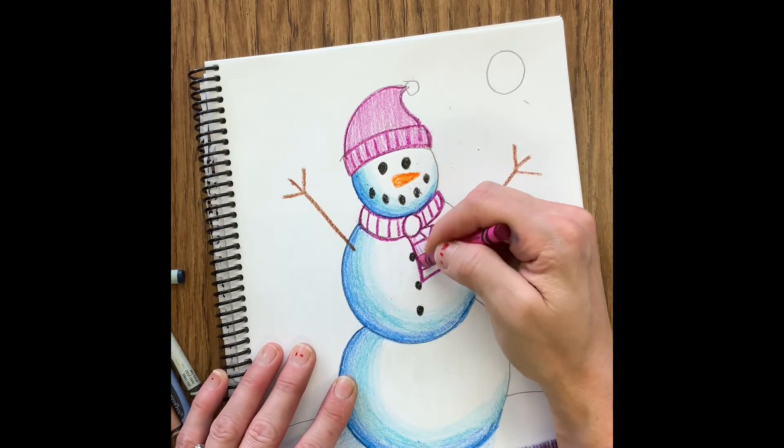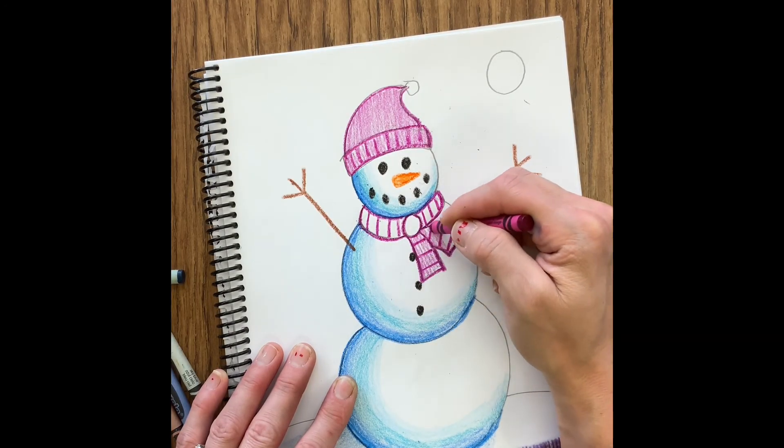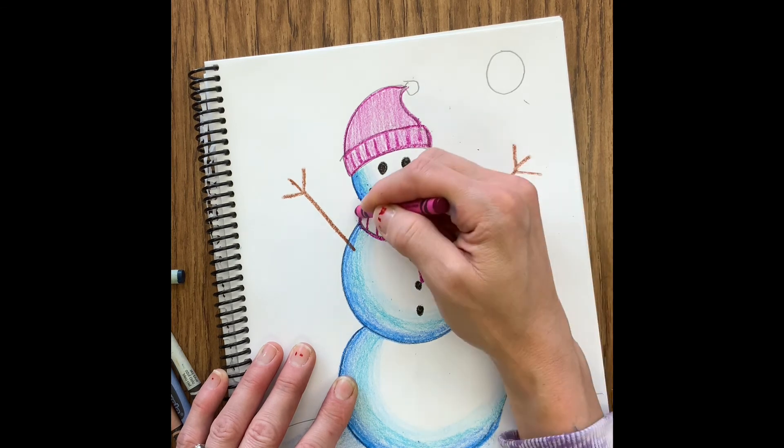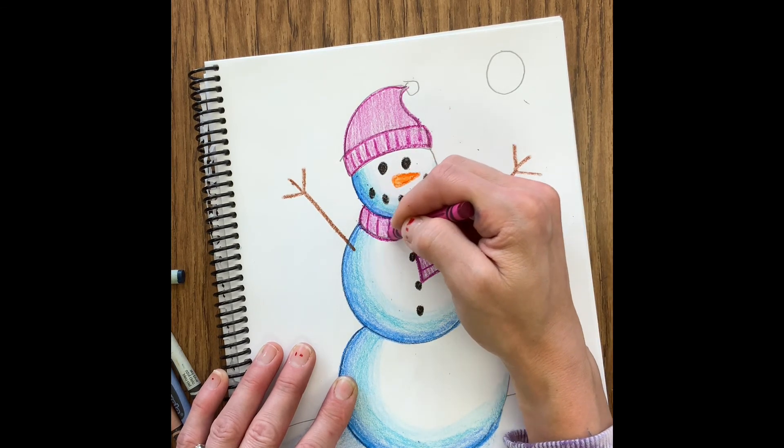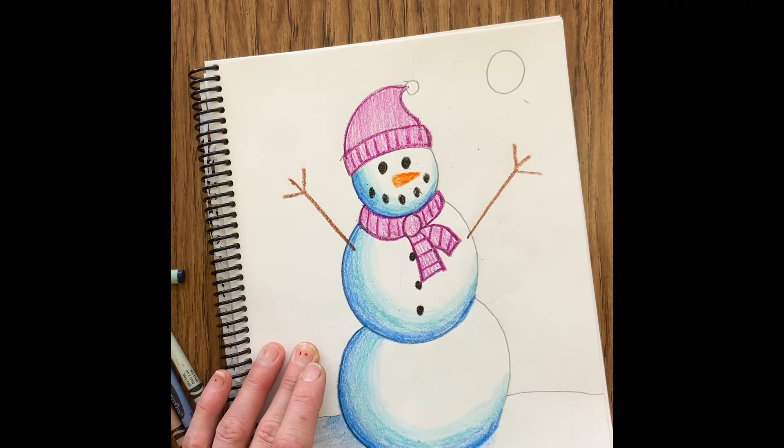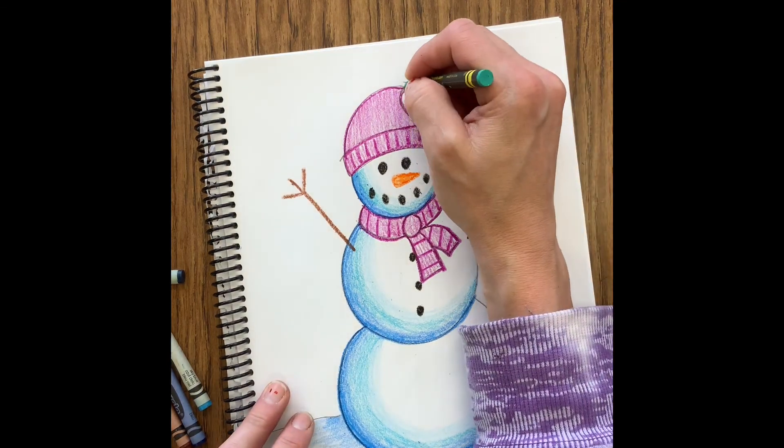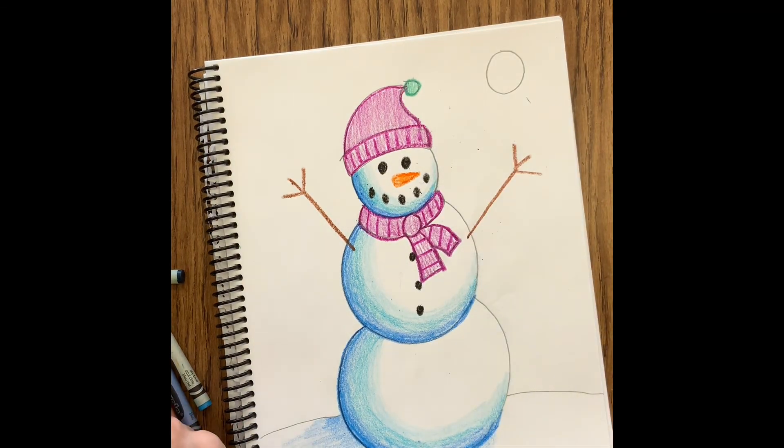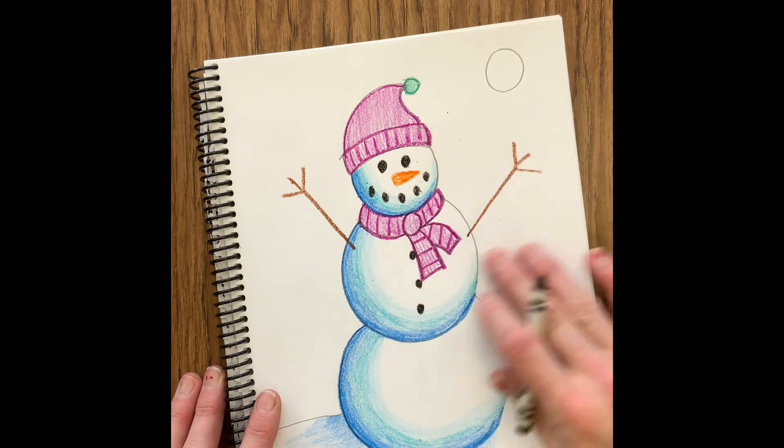This is a nighttime picture with that moon in the sky, so you probably want to color in your background dark to represent the night sky. You can put stars, anything else that you want to add detail-wise to your picture.